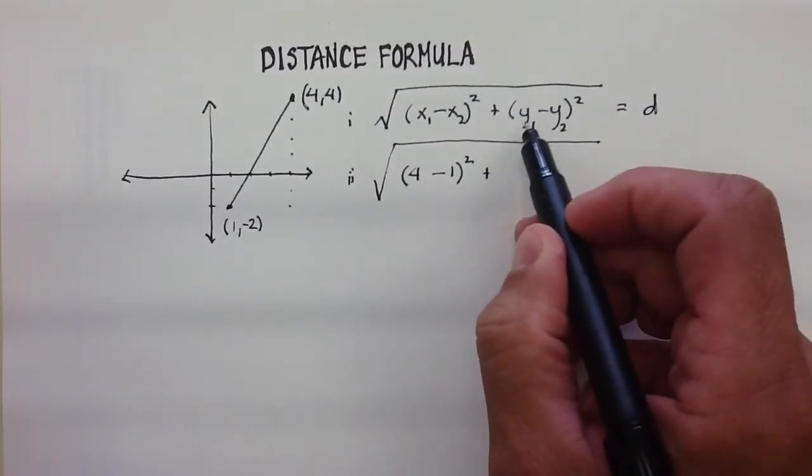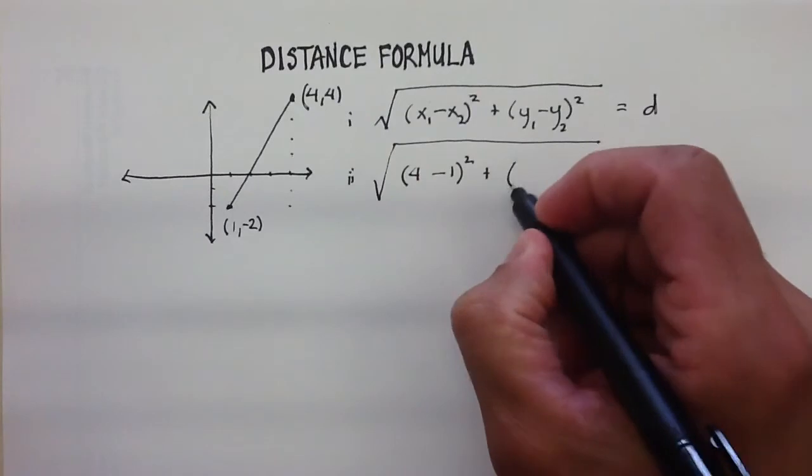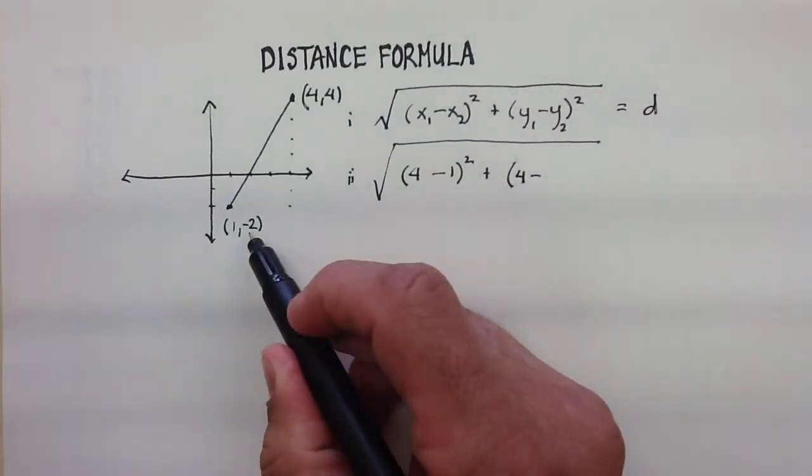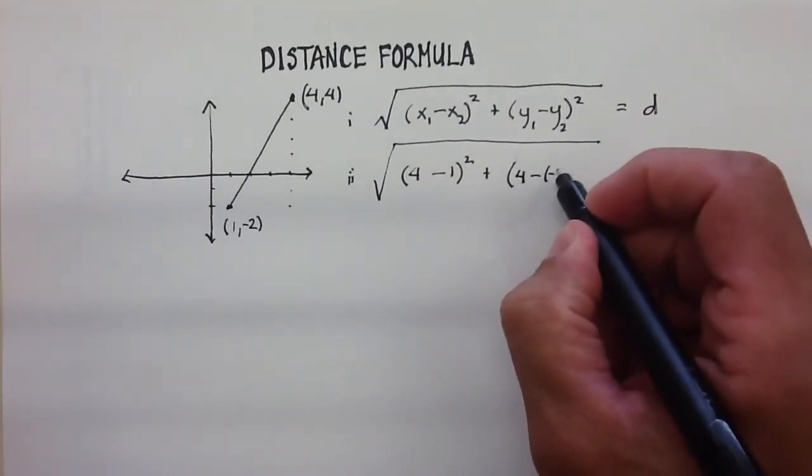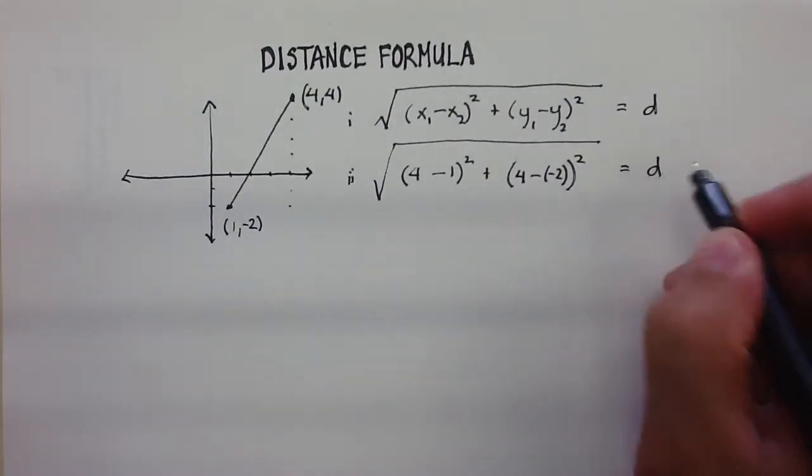Plus the difference between the two y's, so again, it's y sub 1, which is 4, minus y sub 2, which is a negative 2. And then that should be equal to that distance.